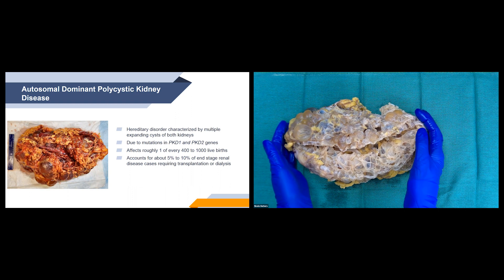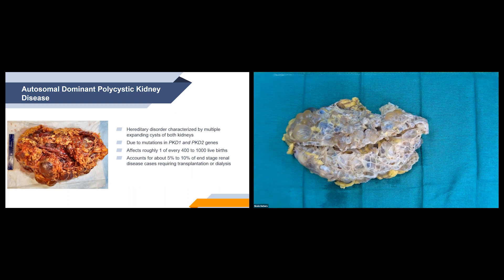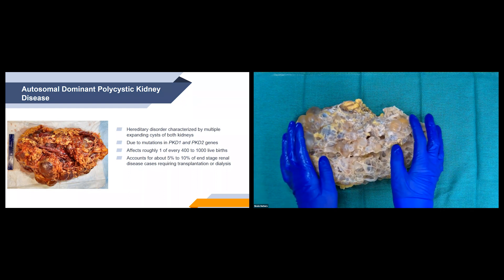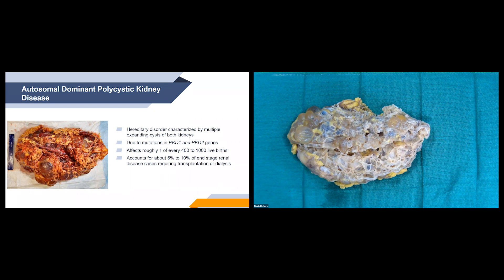The specimen we have out today is about 1.5 kilograms. In comparison, a normal kidney only weighs about 160 grams. The photo in the PowerPoint was taken in a fresh state and has not been fixed, while our specimen has been fixed in formalin — which is why it's more of a pale tan color. This disease is due to mutations in PKD1 and PKD2 genes, and it affects roughly one in every 400 to 1,000 live births. These cysts are not present at birth but develop slowly over time. Onset of renal failure usually occurs in middle age or late adult life, and these account for approximately 5–10% of end-stage renal disease cases requiring transplantation or dialysis.